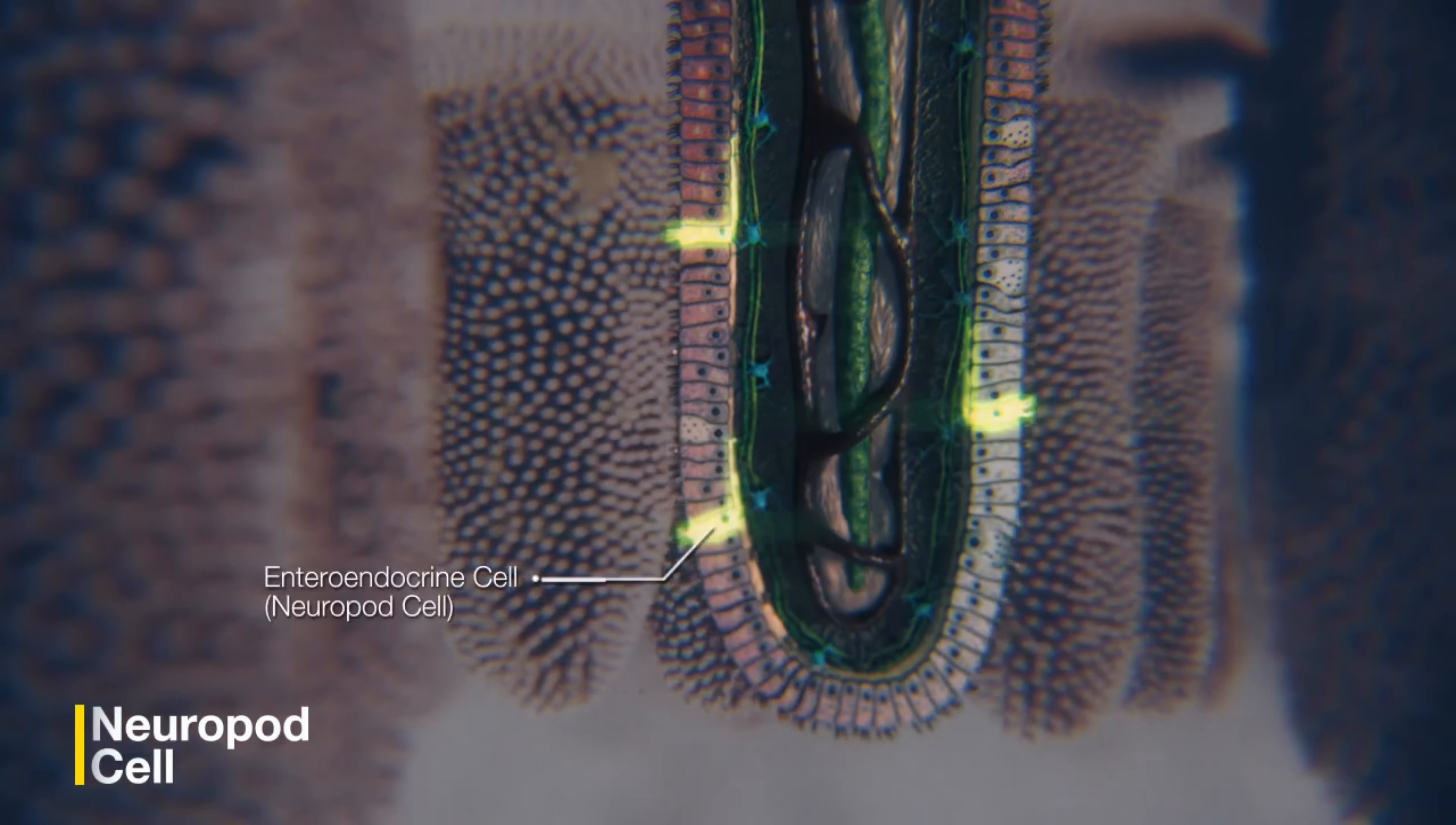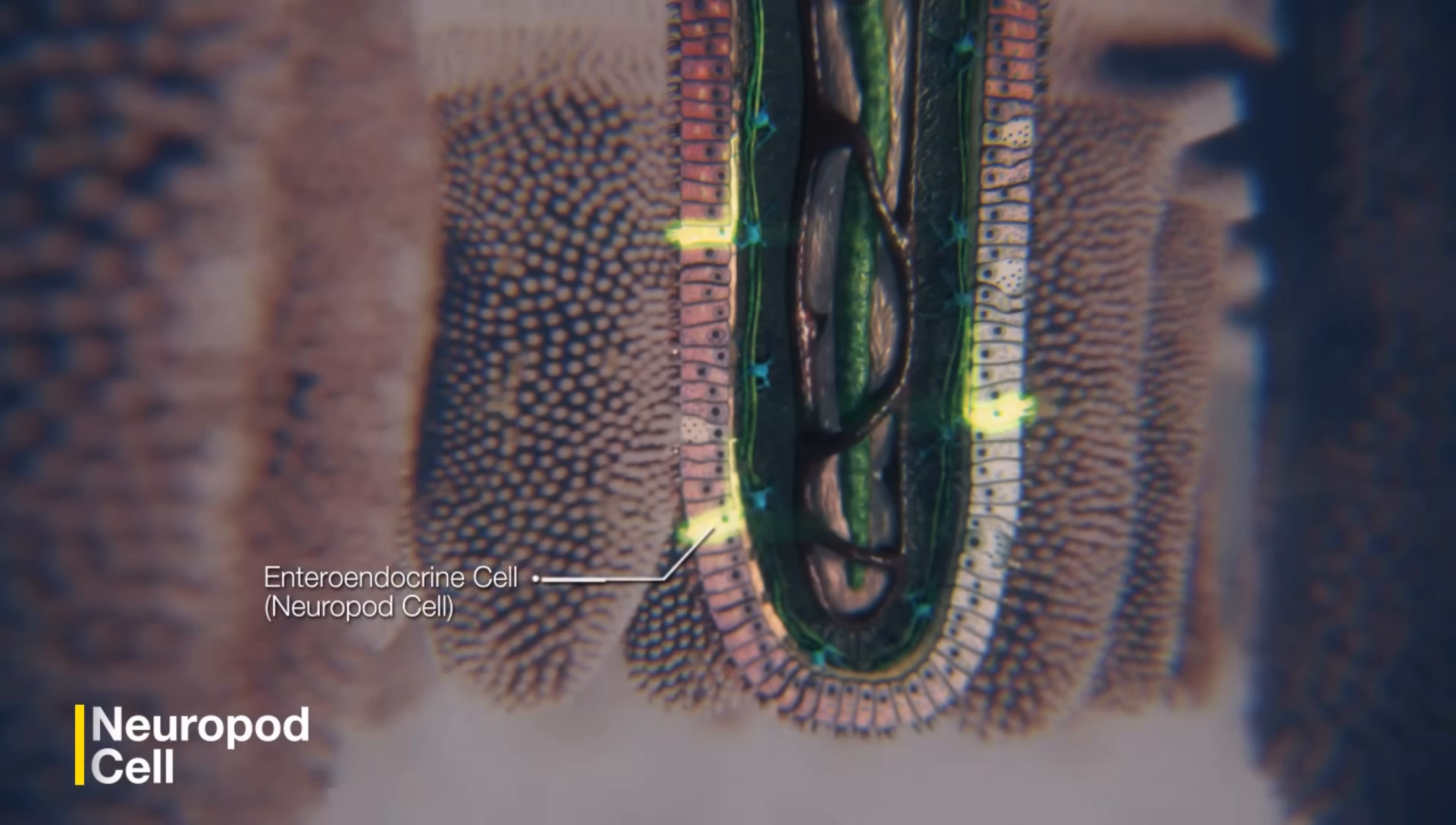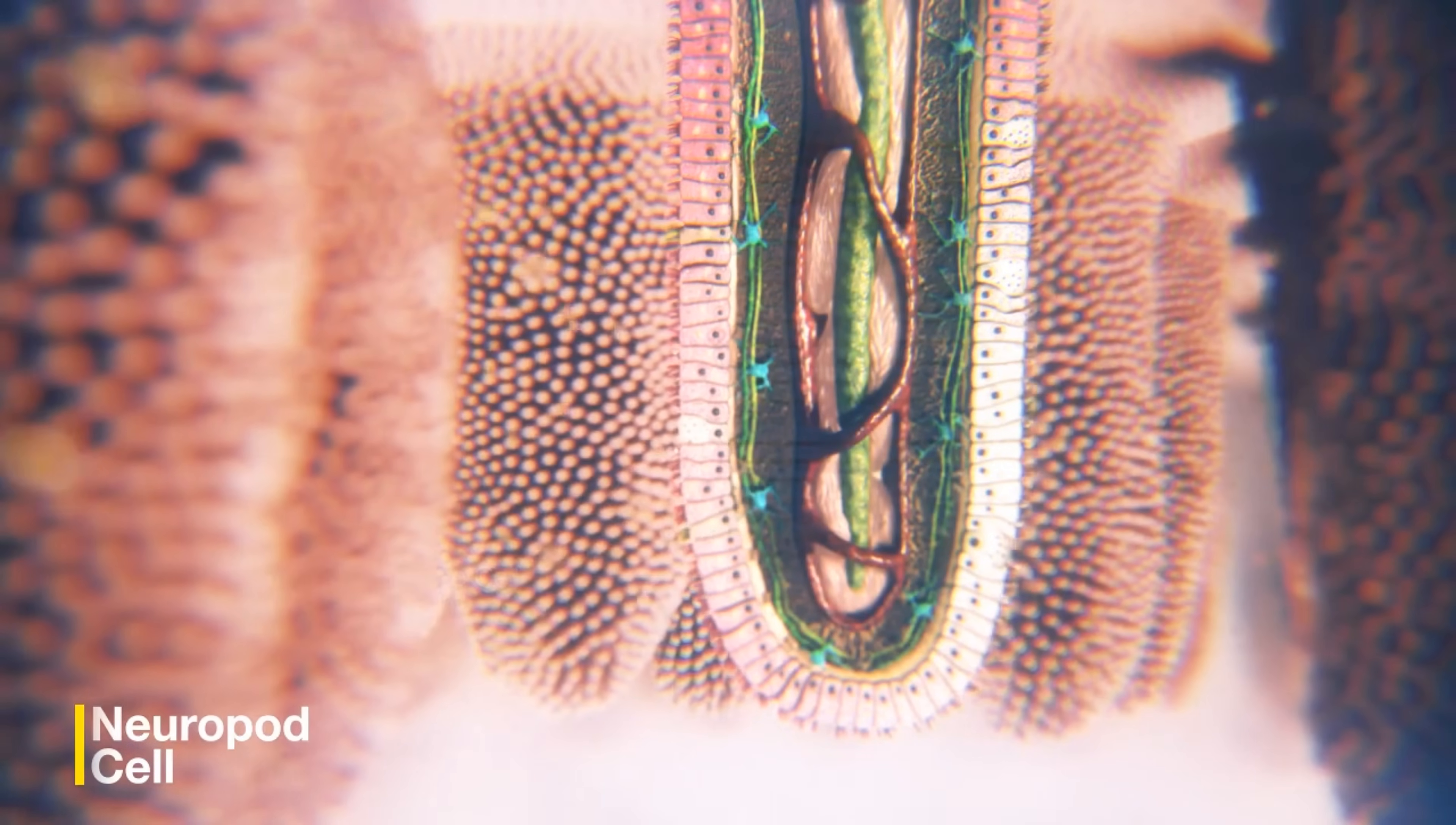One of them, the enteroendocrine cell, is unlike the others. It is our gut sensor.